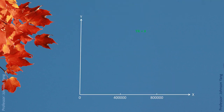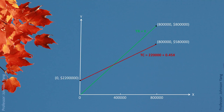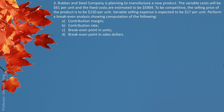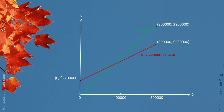Here we can show the chart. The total revenue function is a straight line, and the total cost function is also a straight line. Since we know they are straight lines, we can simply find two points and connect them. The red line represents the total cost function. The chart clearly shows that the crossing point is our break-even point.